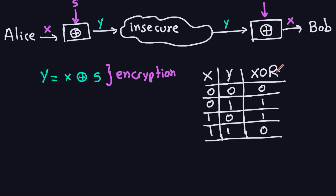Remember, this is the truth table for XOR operations. 0 XOR 0 is 0. 1 XOR 1 is 1. I'm going to call it plus. 1 plus 0 is 1. 1 plus 1 is 0. So if you look at these two lines here, I'm going to look at this property of XOR — if you look at these two lines, this line and this other line here — what those two lines are really saying is the following fact.